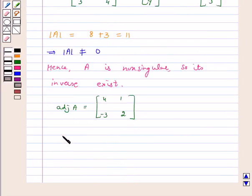Now, we know that A inverse is equal to 1 over determinant A into adjoint A. This implies A inverse is equal to 1 over 11 into 4, 1, minus 3, 2.